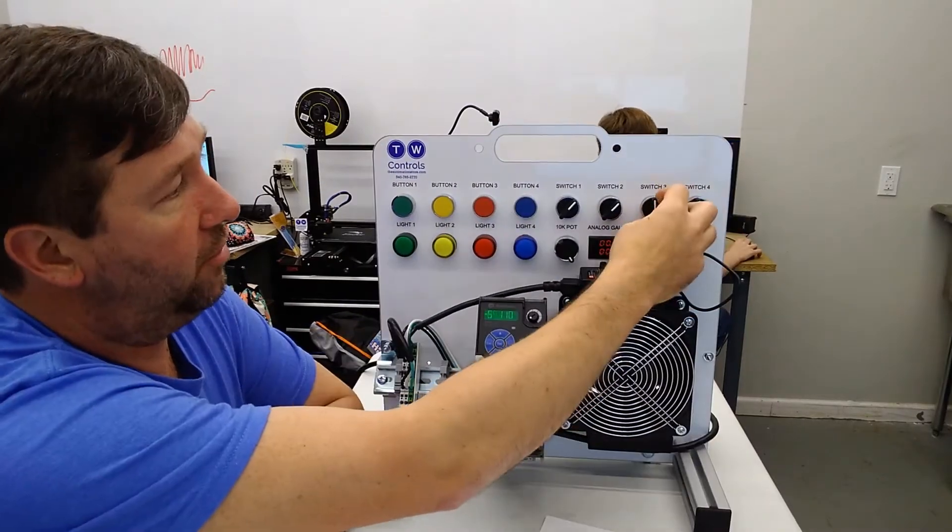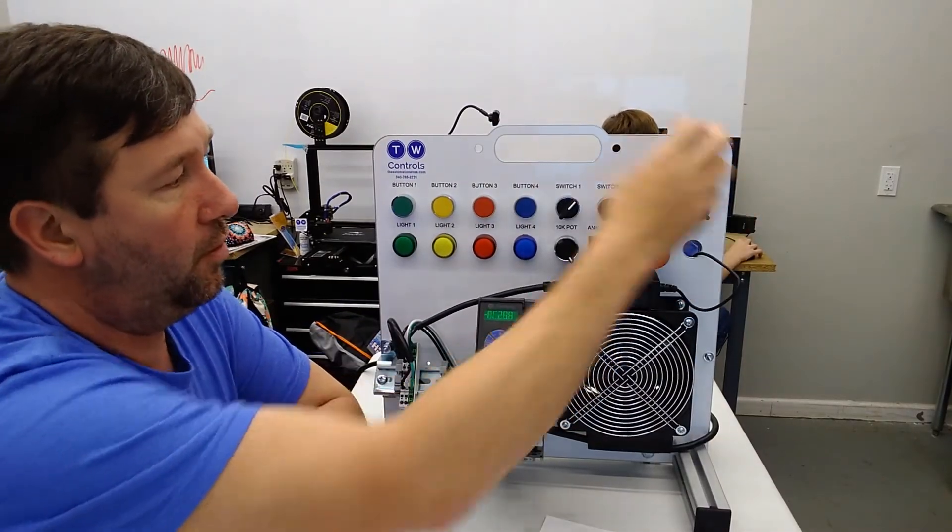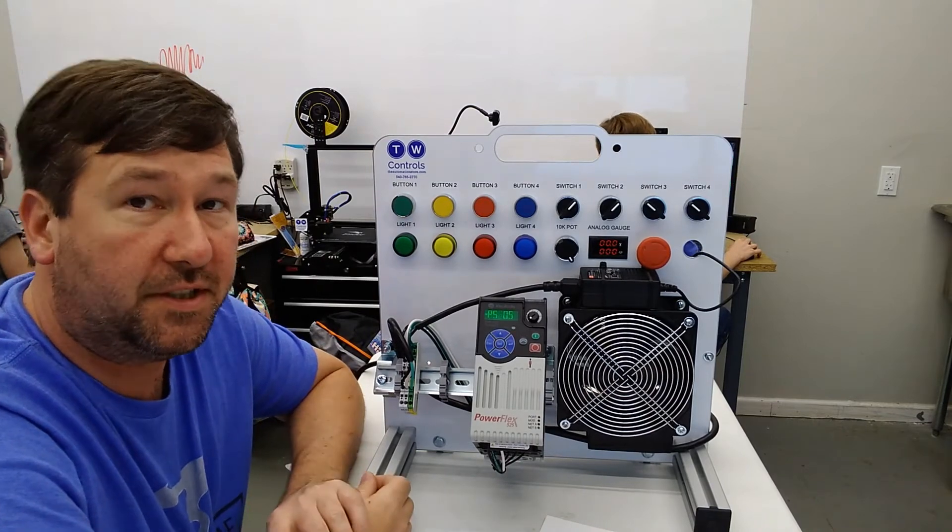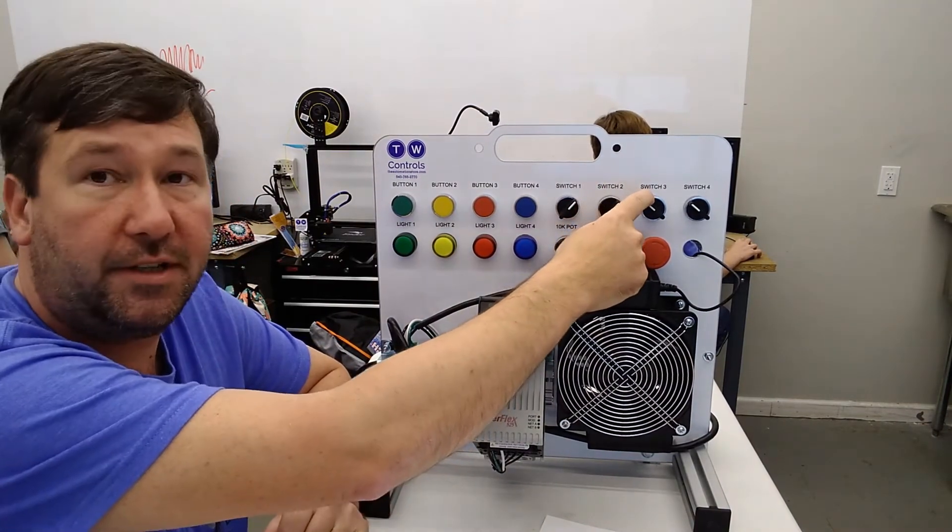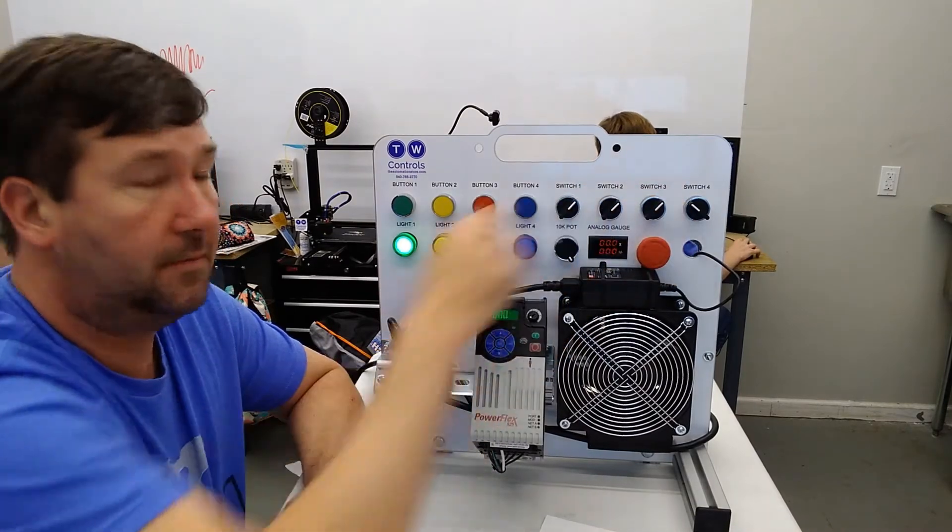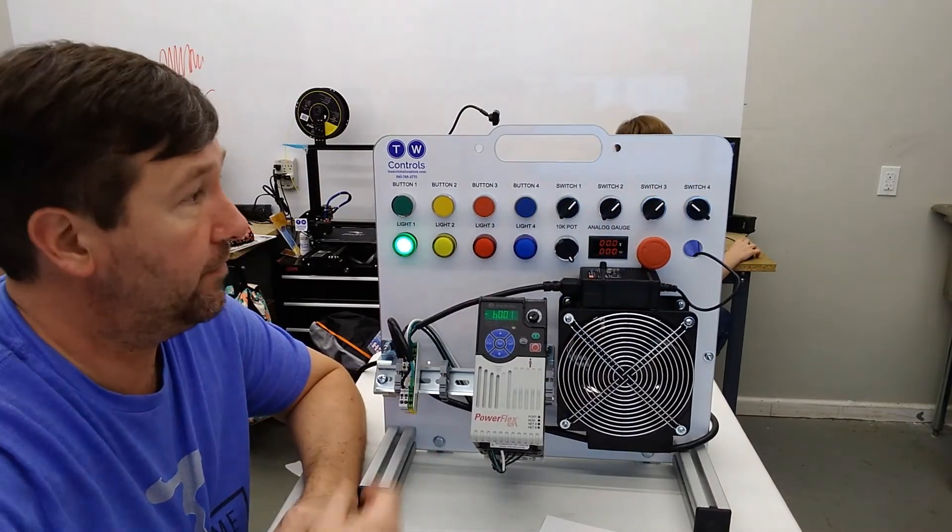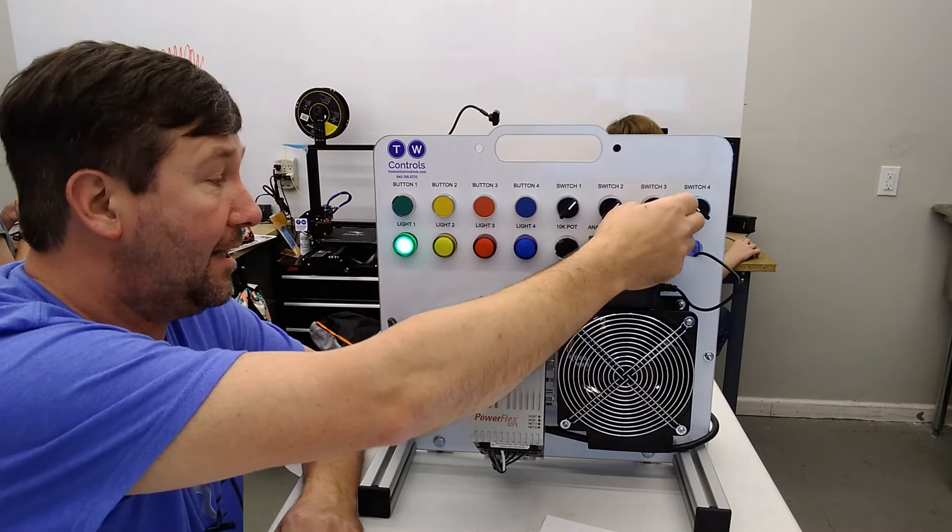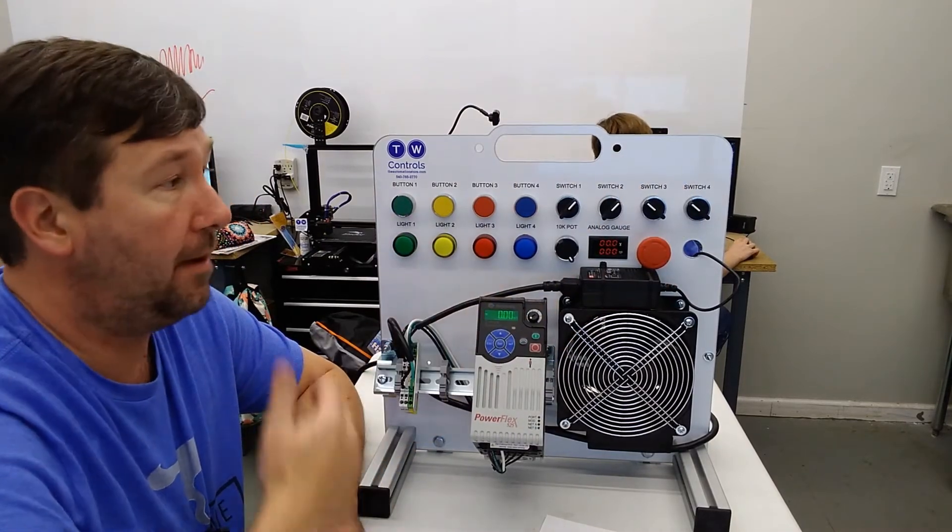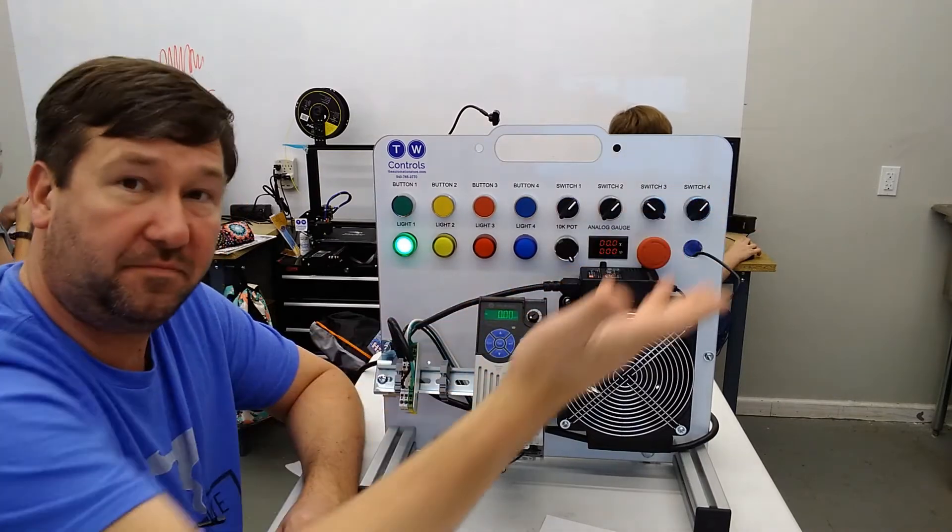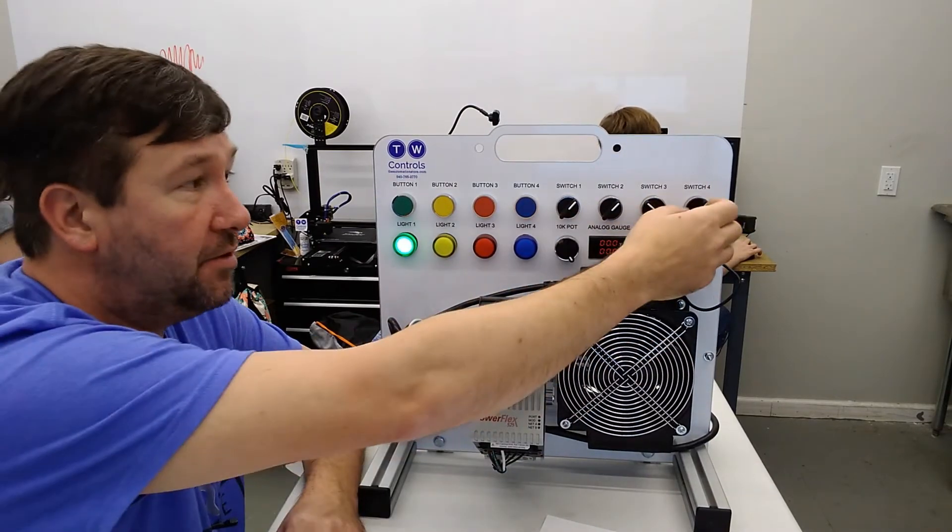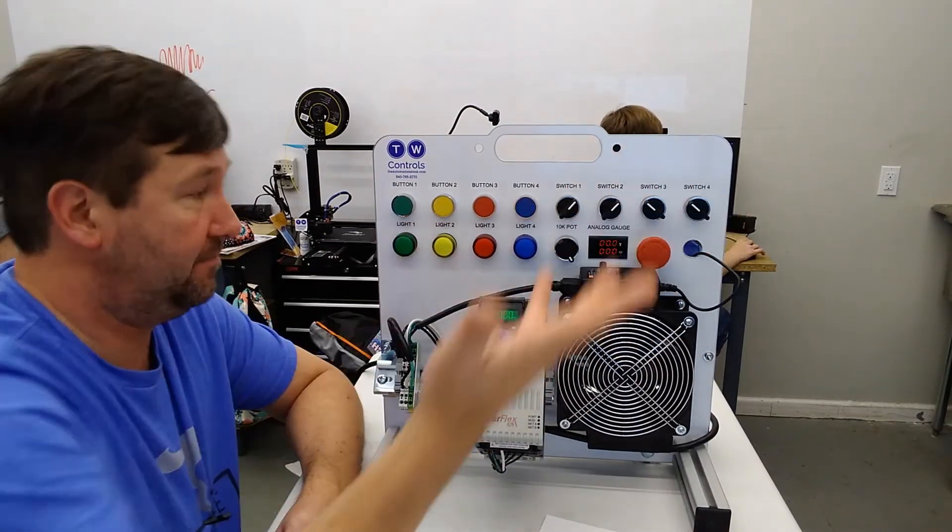All right, so let's throw both switch three and switch four into the left position, and our light is not on. So switch switch three to the right position, and our light comes on. Switch switch three back, and it goes off. We switch switch four to the right position, the light comes on. We switch switch four back, and it goes off.